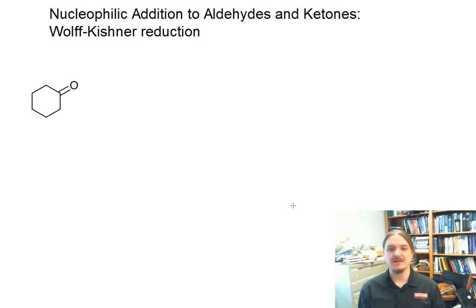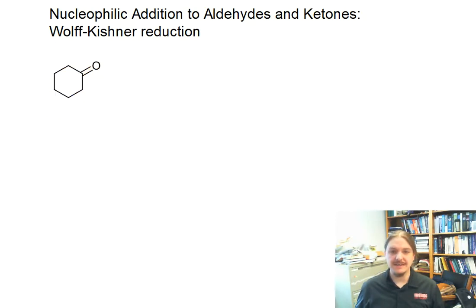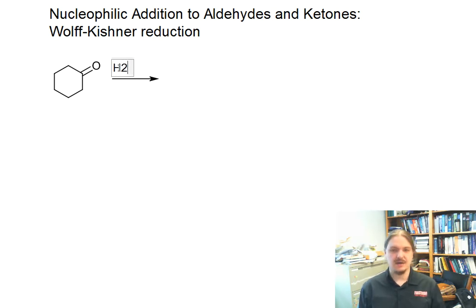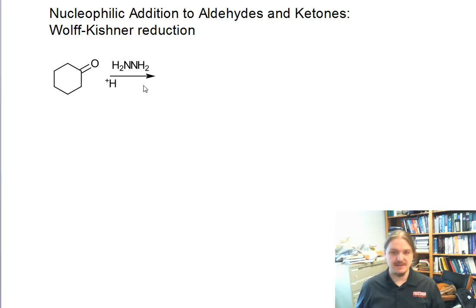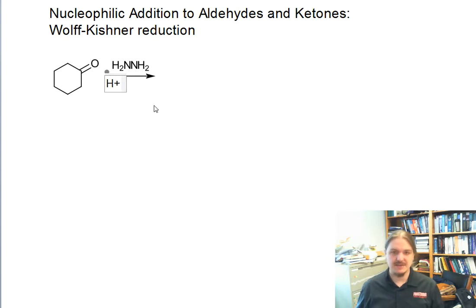Hello. In this video, I'm going to talk about the Wolf-Kishner reduction. The Wolf-Kishner reduction involves converting an aldehyde or ketone first to a hydrazone using hydrazine — we add acid, H+, and remove water as it forms.